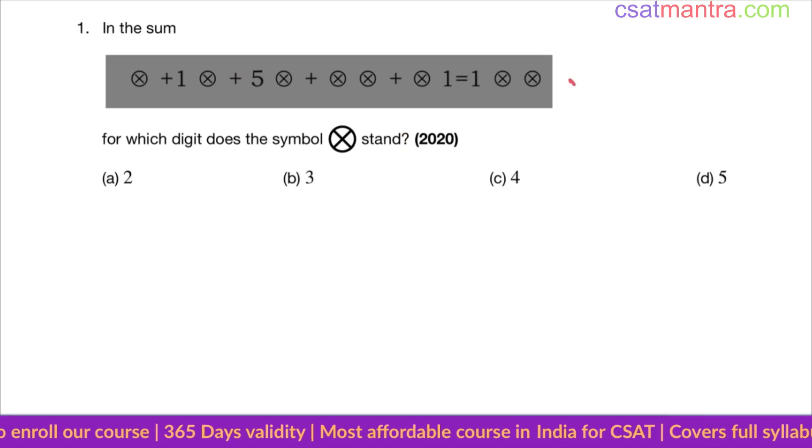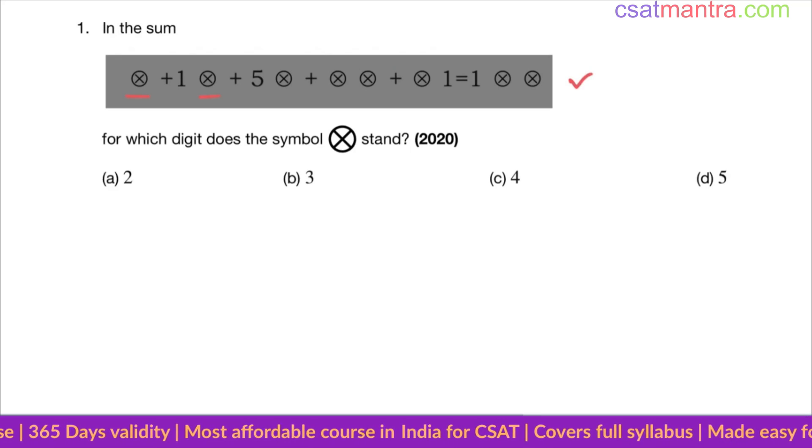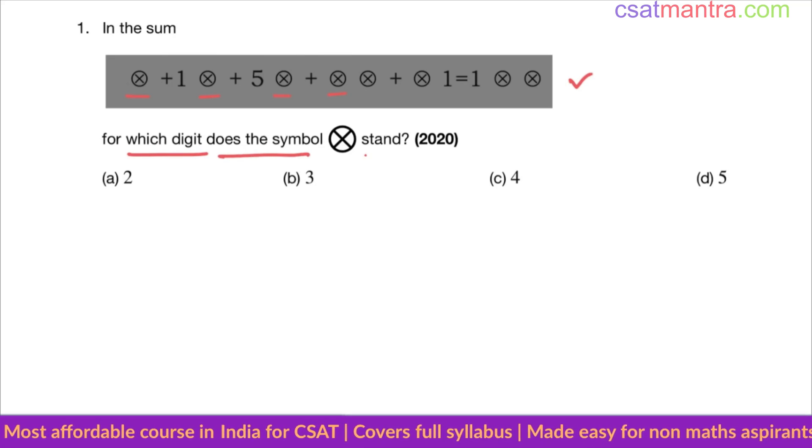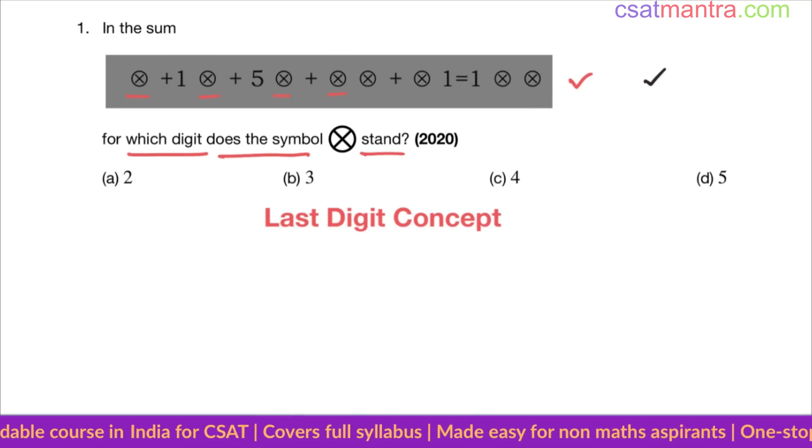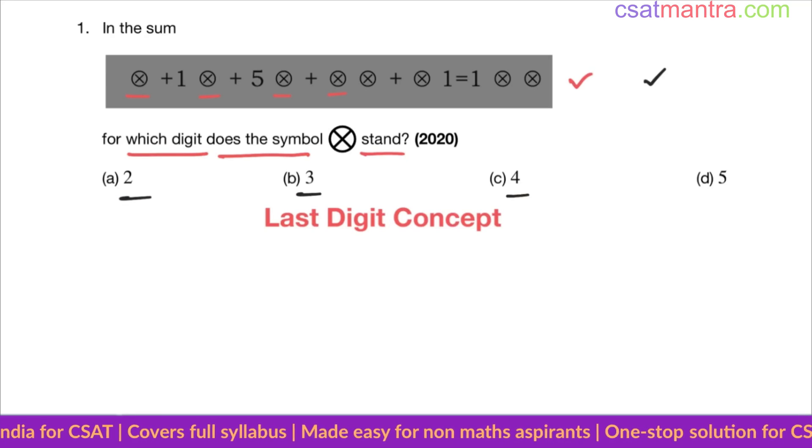There is a sum given. In that sum we have this symbol. For which digit does the symbol stand? We can solve this problem in a conventional way by substituting all these options to see which one satisfies, but that's a bit lengthy, my friends.